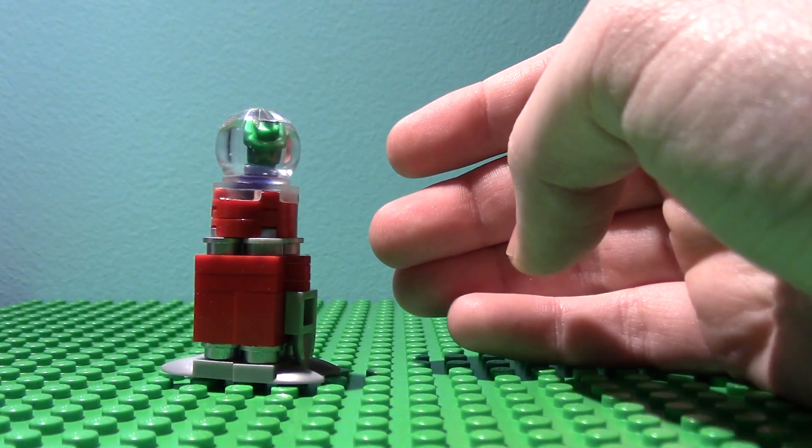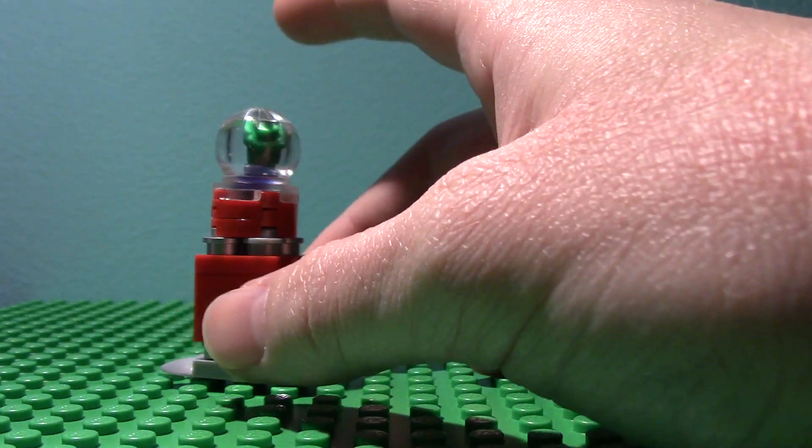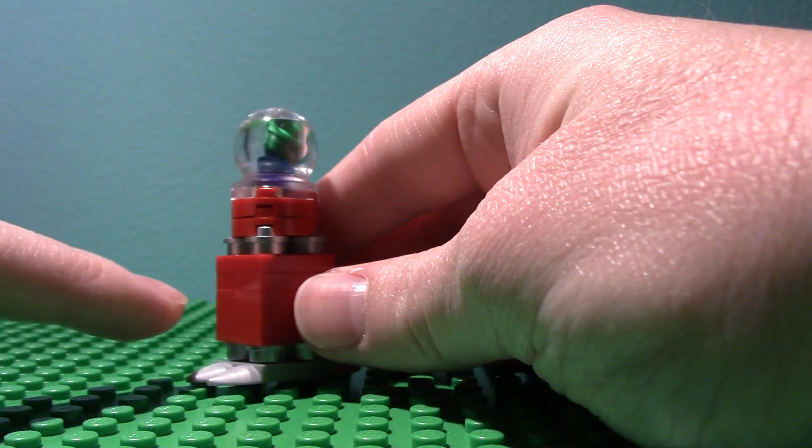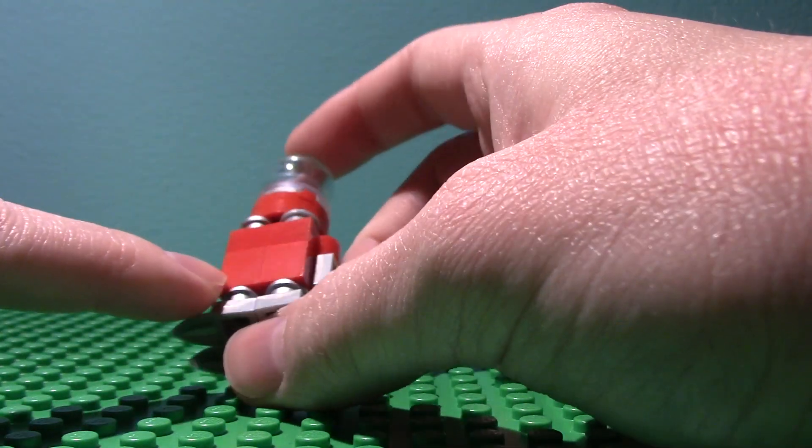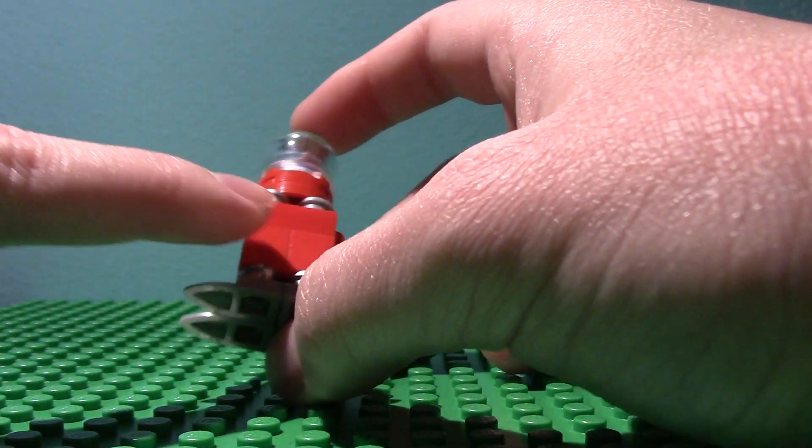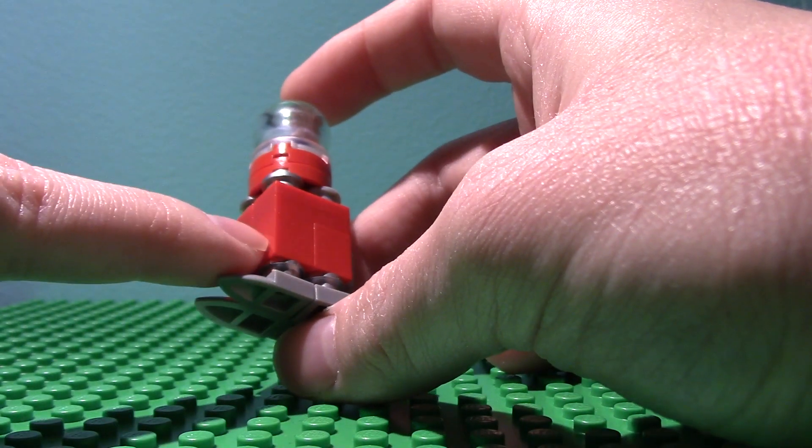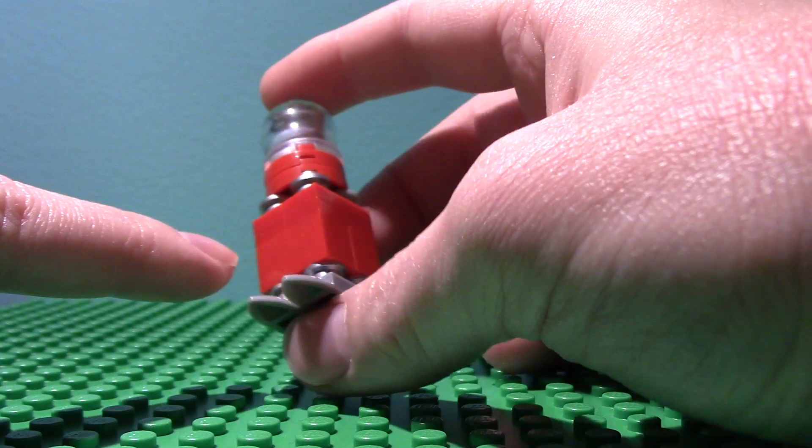People are going to be like why is there not much detail and I'm going to say because if I were to put detail on the side here I won't be able to do it there. If I put 1x1 bricks on this side I won't be able to do it here, and if I put a red Travis brick here I won't be able to put a piece there.